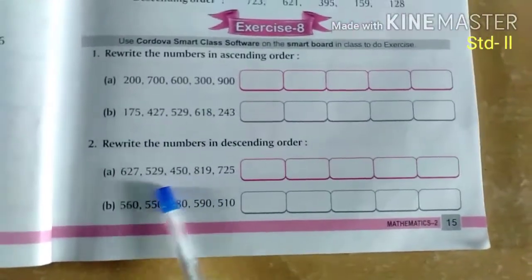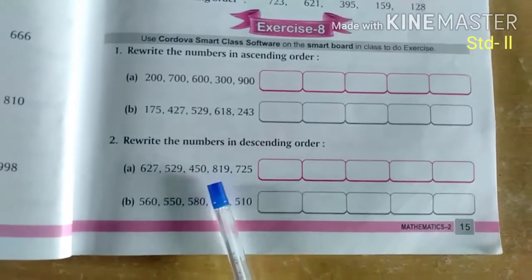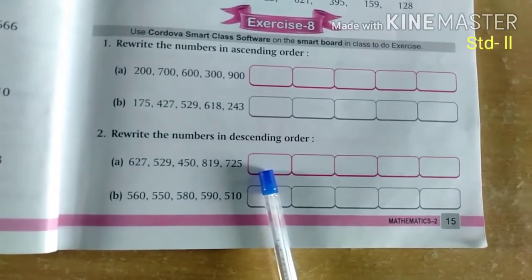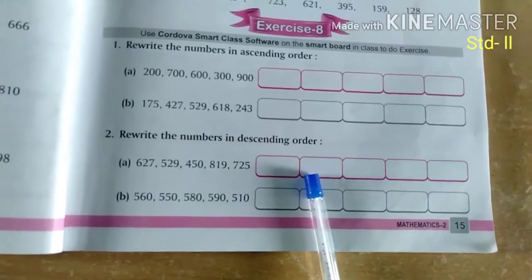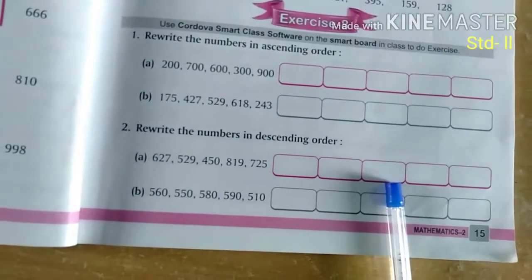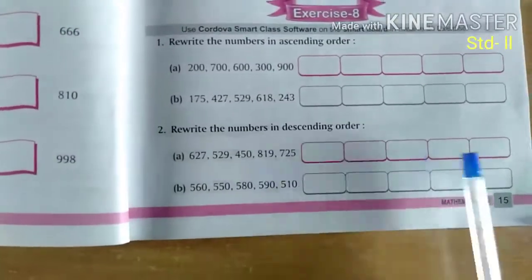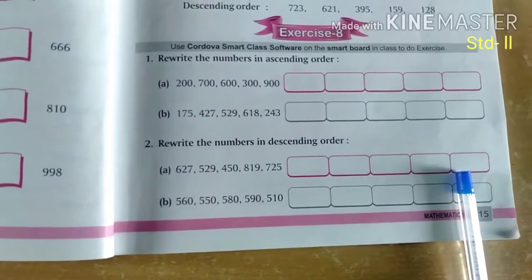Look for the biggest number. 8 is the biggest, 800. So 819 will come first, second comes 725, third comes 627, 529 and the last will be 450. Did you understand?